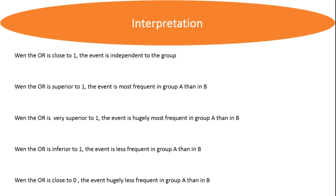If the odds ratio is greater than one, the event is more frequent in group A than in group B. That means that belonging to group A is a risk factor — when you belong to group A, you increase your probability of developing the disease in an epidemiological context.